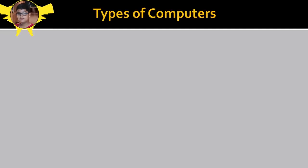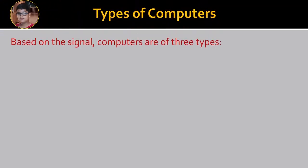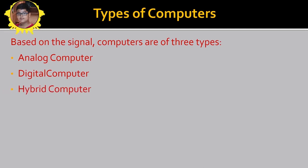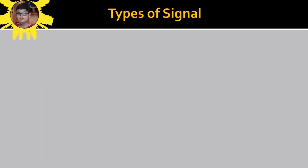In this video, we will discuss Types of Computer on the basis of Signal. So let us start. There are three types of computer on the basis of Signal: Analog, Digital, and Hybrid Computer. Let's see and understand the Types of Signal.